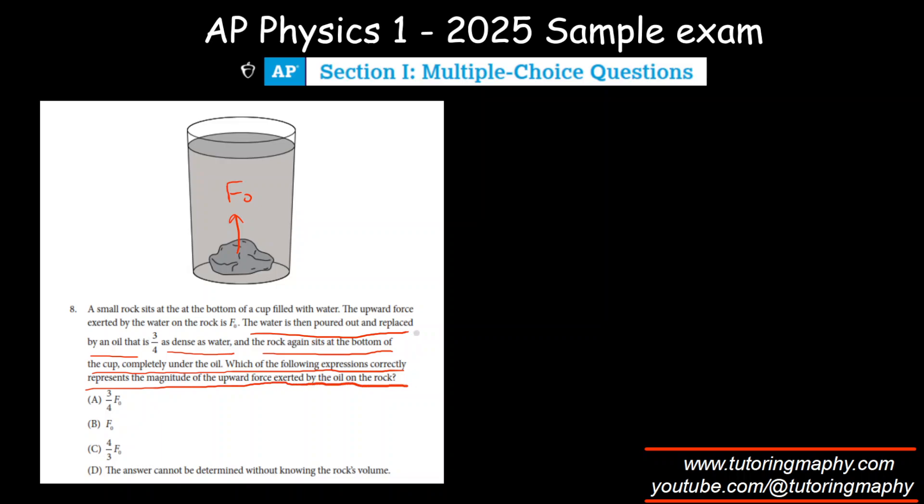What is the formula for buoyant force? The formula for buoyant force is mass of the fluid displaced times g.